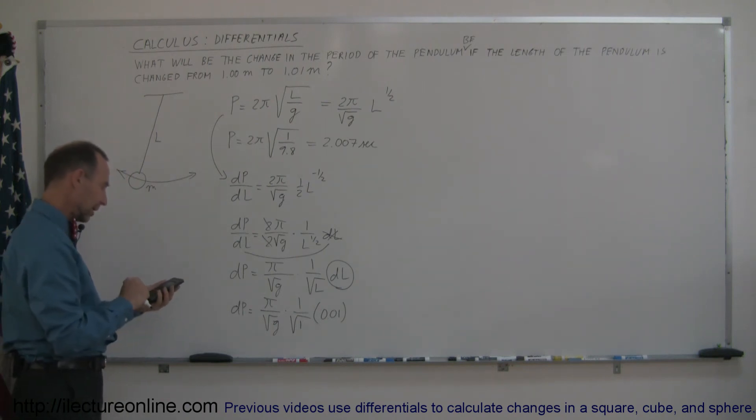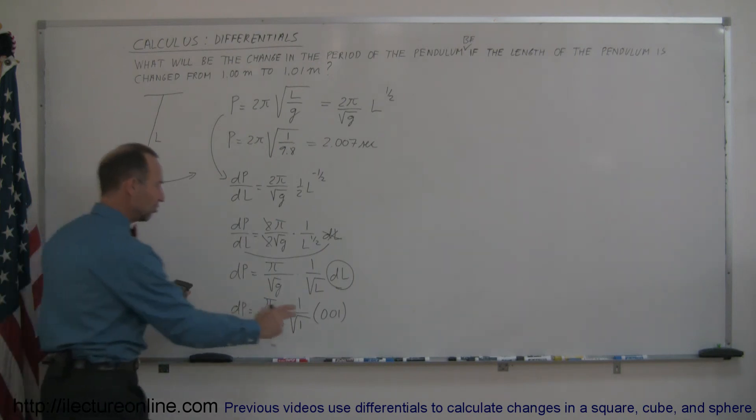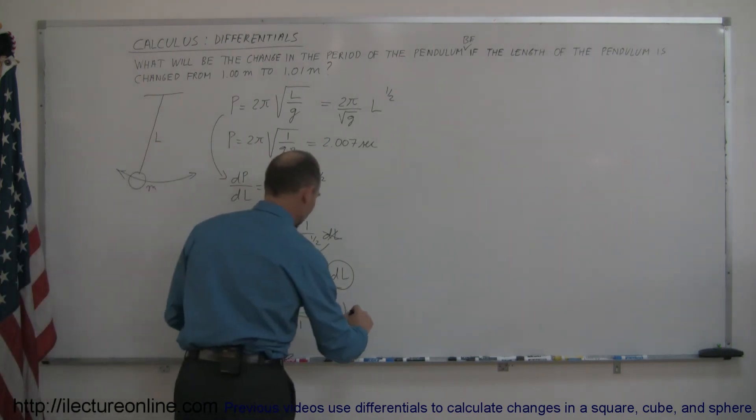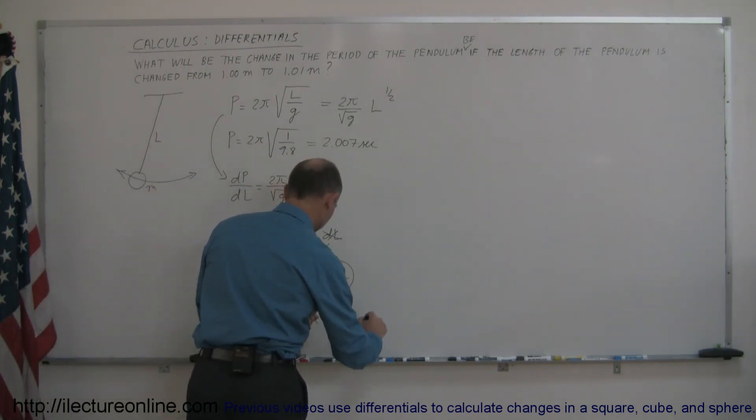So let's plug that in. So we have 3.14159, which is π, times 0.01, which is the change in the length of the pendulum. And now we divide that by the square root of g, 9.8 square root equals. And that means that the change in the length of the period is 0.01.